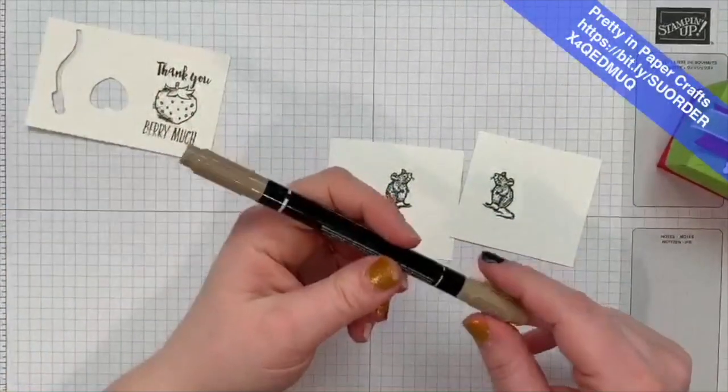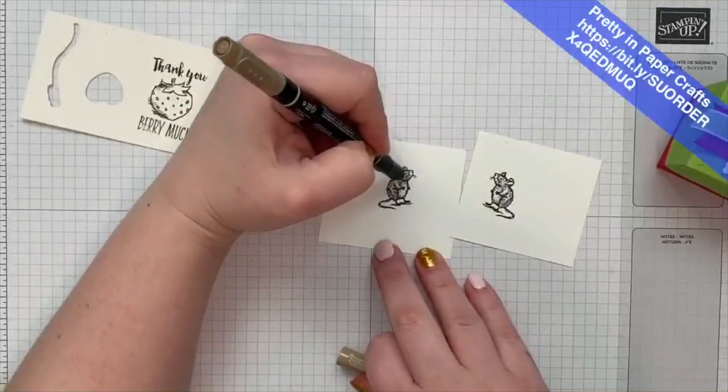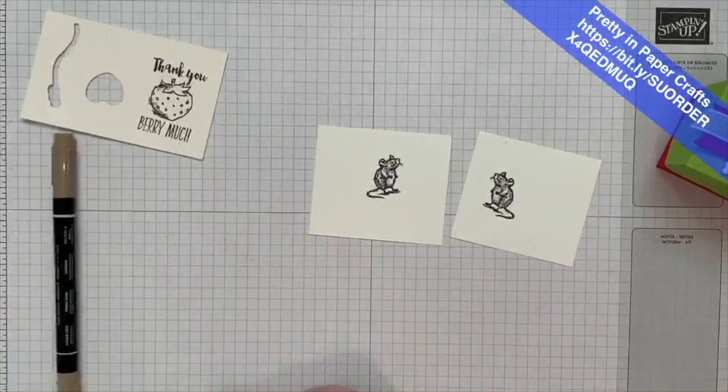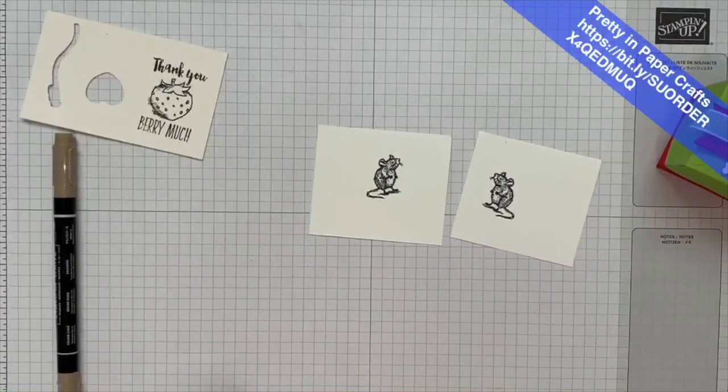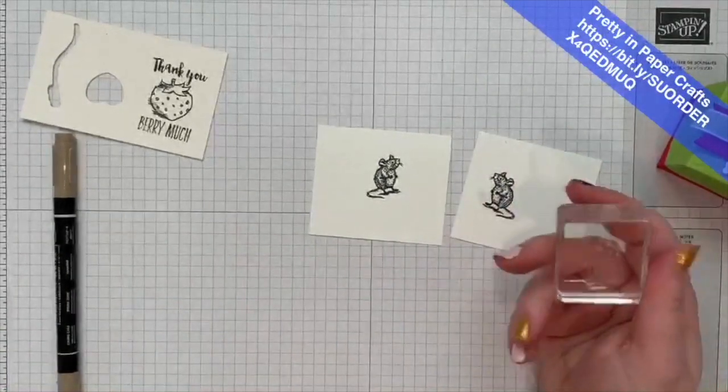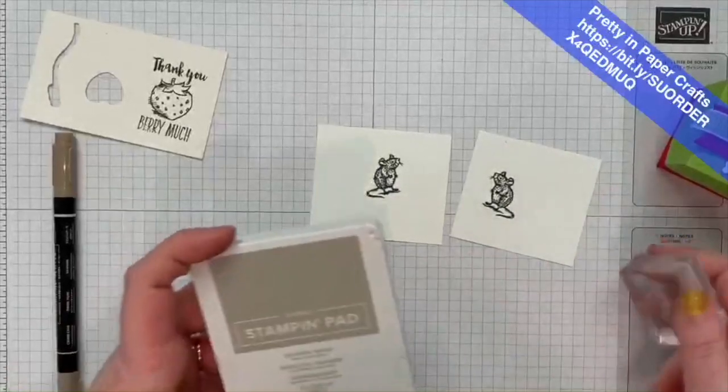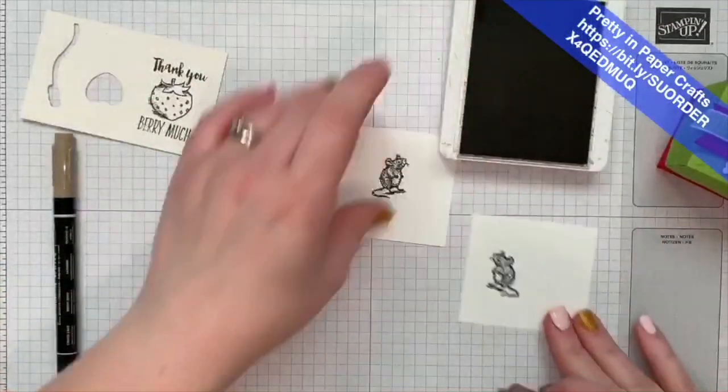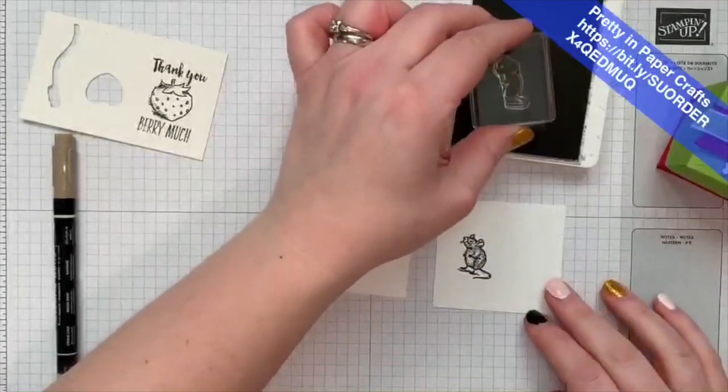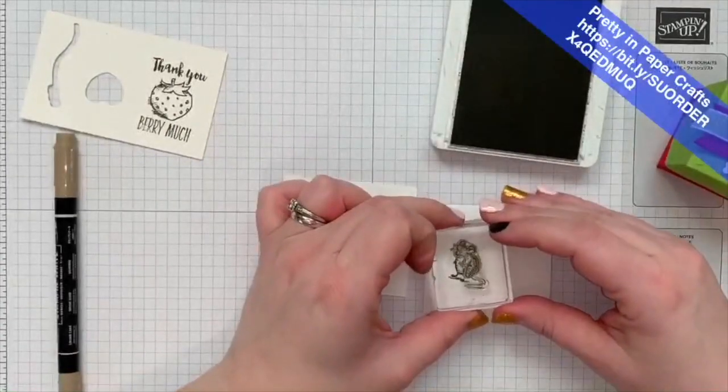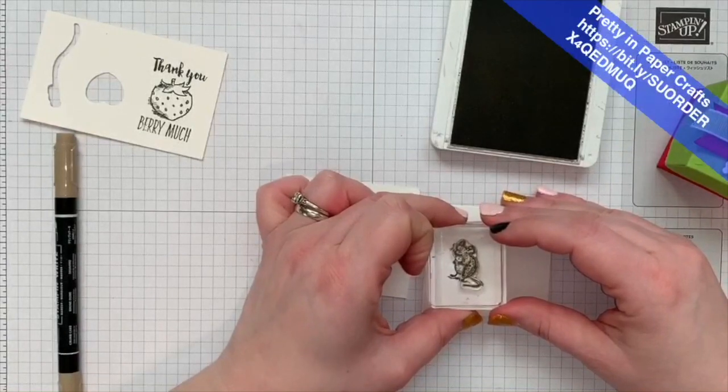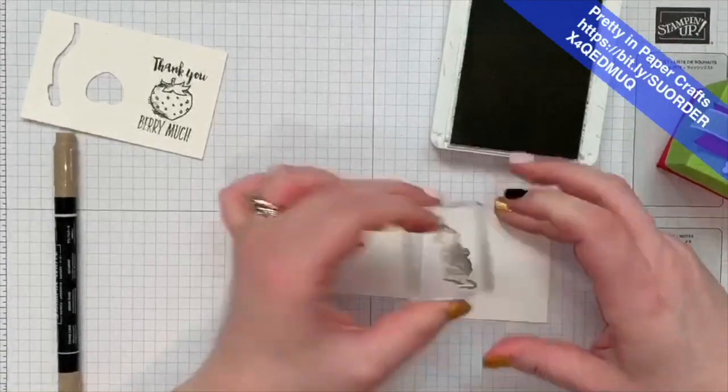So, the first thing we need to do is color our mice. This one, I have the Stampin' Write marker. Oh, wait. This is another one of those two-step stamps. And it has an inside piece to fill the inside of our mouse. So, for one of the mice, at least, we can just stamp it. And then the other one we can color.